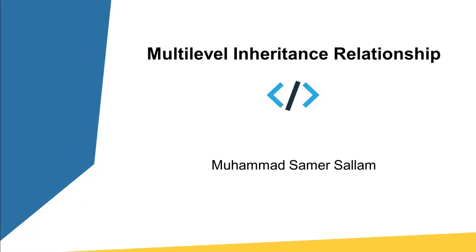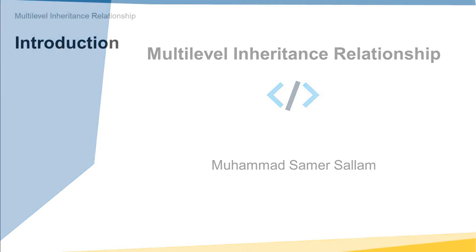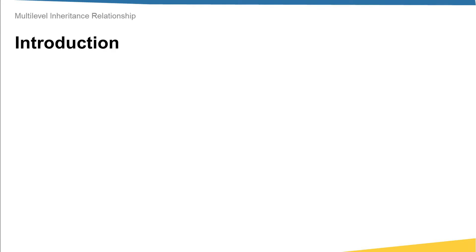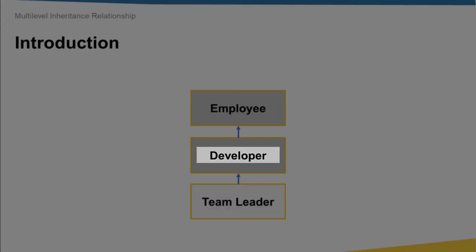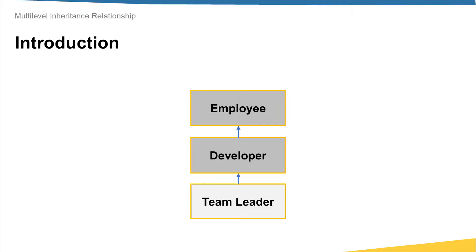Hi everyone and welcome to the multi-level inheritance relationship lecture. In this lecture we are going to discuss the following scenario: assume that you have an Employee class, a Developer class, and a TeamLeader class. It's clear that TeamLeader is just a Developer and Developer is just an Employee. We'll talk about how to define these classes and this relationship in Python.